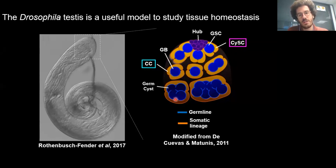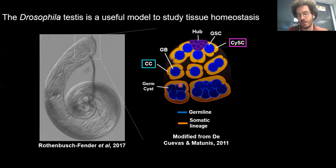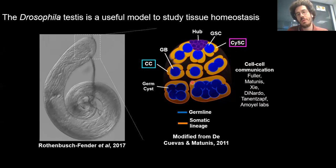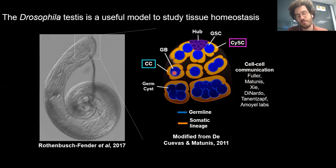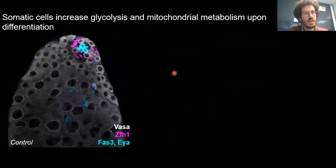The post-mitotic cyst cells ensheath the germline and support it throughout development. Notably, around the four-cell stage, these cyst cells establish tight junctions between them, isolating germ cells from the surrounding environment. Despite many labs describing signaling events among cell types, there is still much we don't know about somatic-germ communication and how these two lineages coordinate differentiation programs.